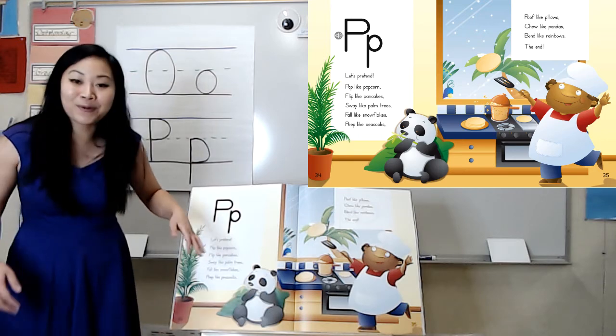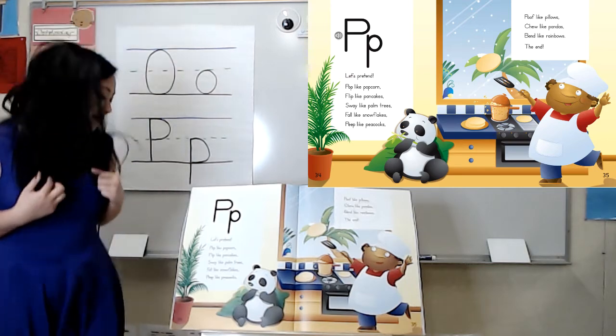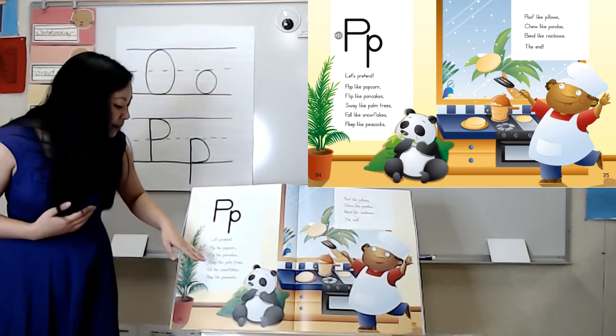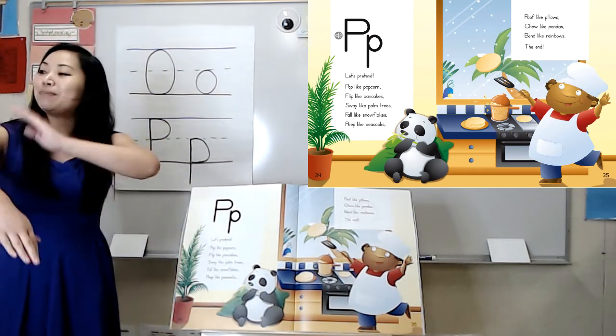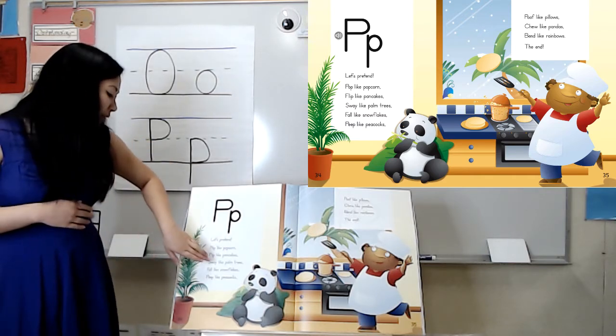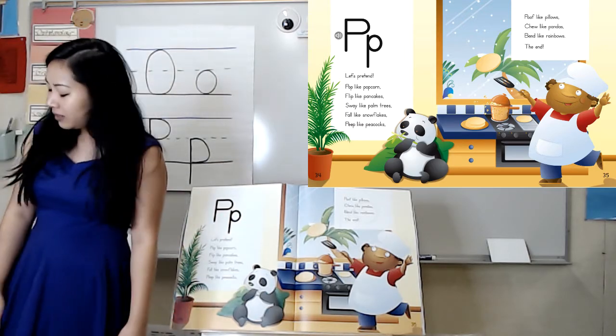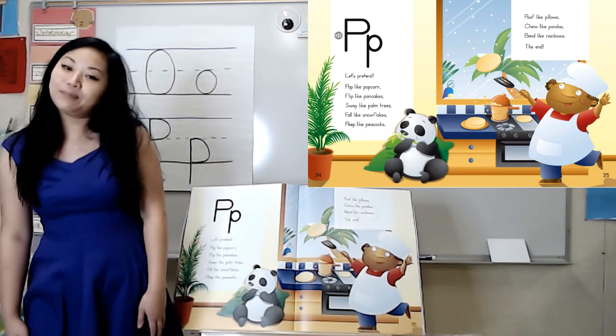Pop like popcorn. All right, let's pop like popcorn. Oh, you guys are good at being popcorn. Now we're gonna flip like pancakes. Can you pretend you're flipping? We probably shouldn't have flipped. That's not too safe in the home. Sway like palm trees. So now you're pretending you're a tree and you're just swaying in the wind. Oh, you guys are good at being trees.